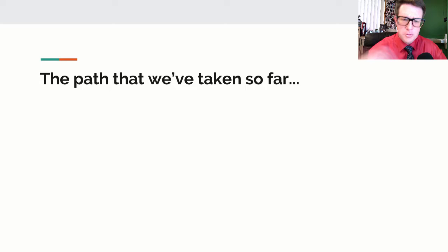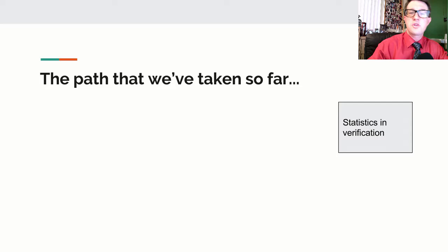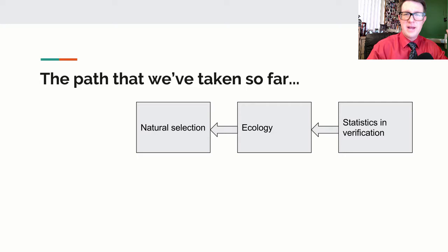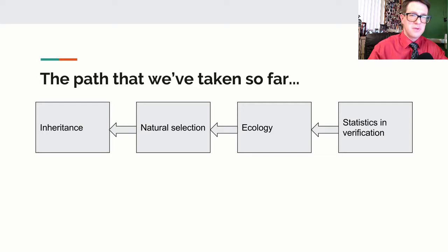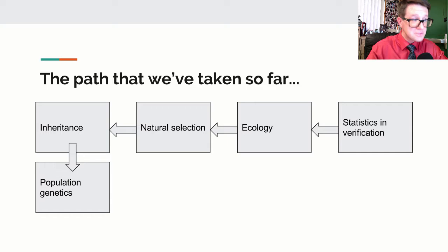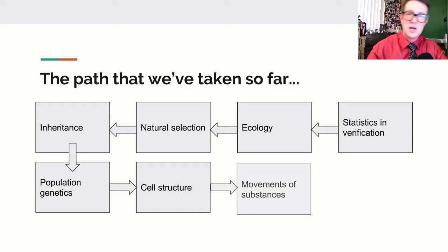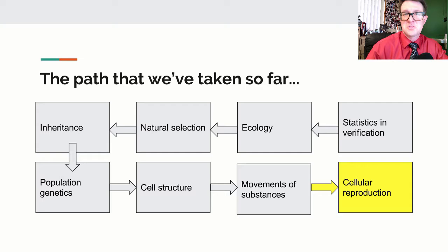We started the year with statistics, then dealt with macroscopic ecology and natural selection — evidences for natural selection and how it works — which led to questions about inheritance patterns and Mendel's laws, bringing us to population genetics. From there we talked about cells and how motion happens, and now we can talk about making those cells reproduce.